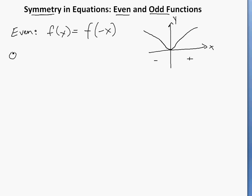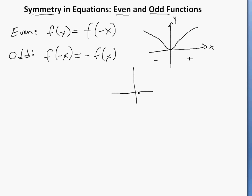If you have an odd function, f of negative x equals negative f of x. If you were to graph it, it would be like you have something like this, and it's symmetric. On the negative side, it's going to be the negative of this — if this is f of x, then on the negative side it'll just be negative f of x. So it's kind of symmetric by a line drawn through the origin.